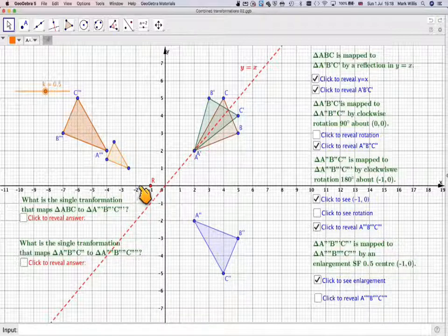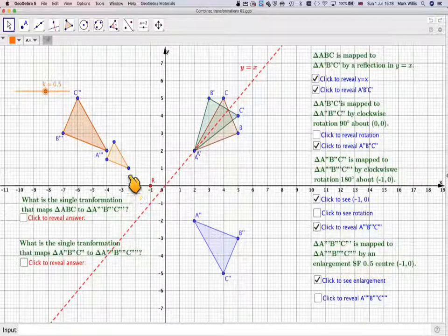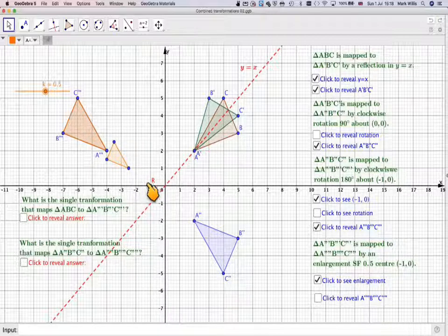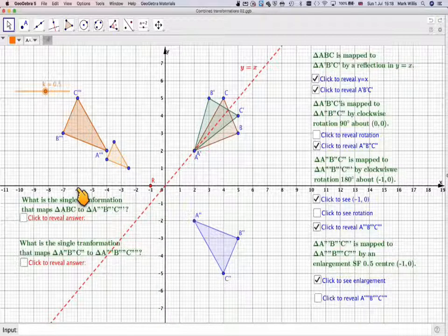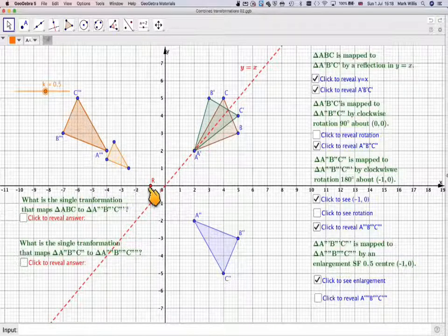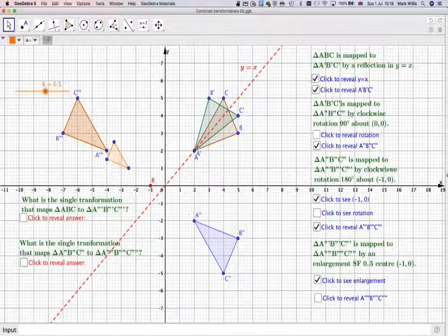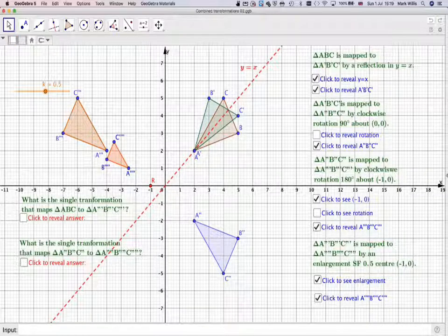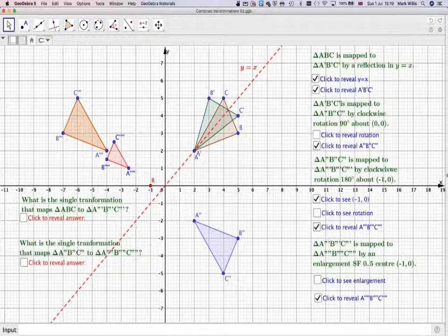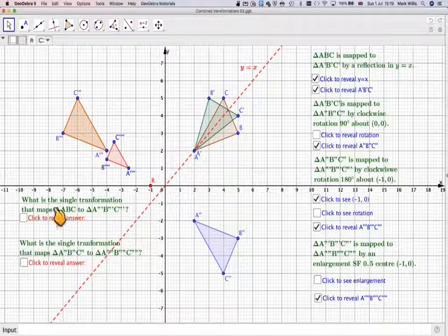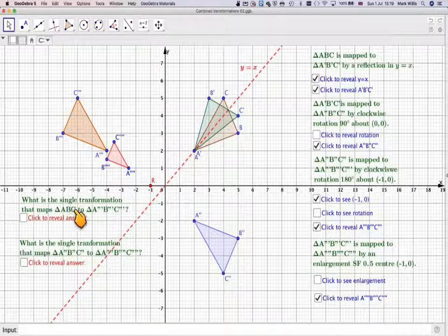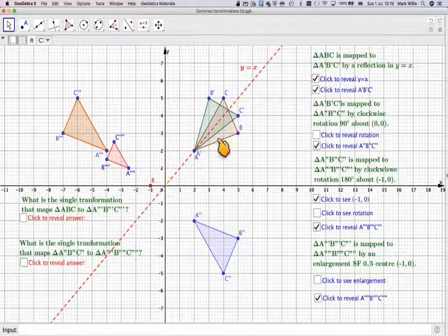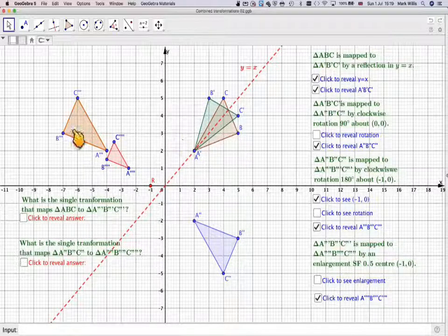Similar idea for B, for A, sorry. So A is 3 along, so therefore it will be 1.5 and then up 1 because this is up 2. And the same idea for C. C is going to be 5 along and then up 5. So therefore this will need to go 2.5, up 2.5, and then join them all up. If we click on that, we then get the final image. Now we need to answer these questions. What was the single transformation that takes ABC to A'''B'''C'''? So what takes that one to that one?